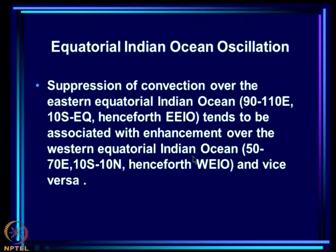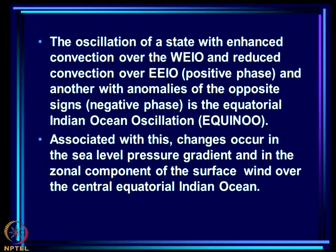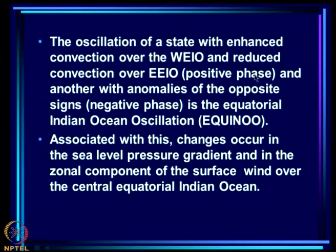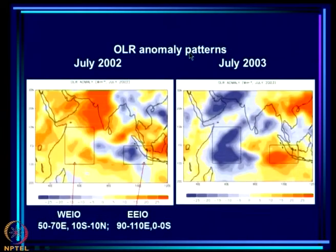There is a see-saw in convection between the western equatorial Indian Ocean and eastern equatorial Indian Ocean: when convection is intense over WEIO it tends to be suppressed over EEIO, and vice versa. The oscillation between the state with enhanced convection over WEIO and suppressed over EEIO, and the opposite state, is what we call the equatorial Indian Ocean oscillation, or EQUINO. The positive phase corresponds to enhanced convection over WEIO, which is favorable for the monsoon.